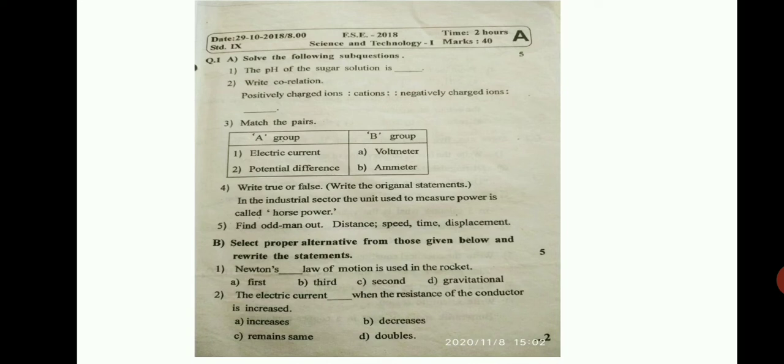Next question is find the odd man out. Distance, speed, time, displacement. Question number B for first is select proper alternative from those given below and rewrite the statement.